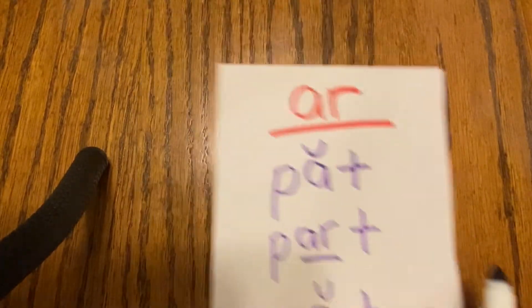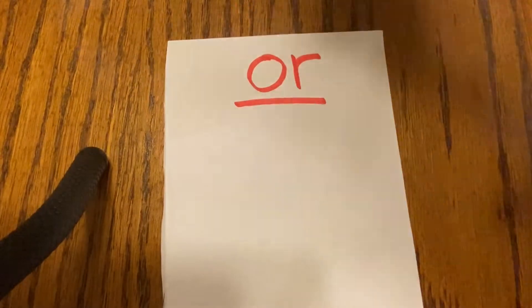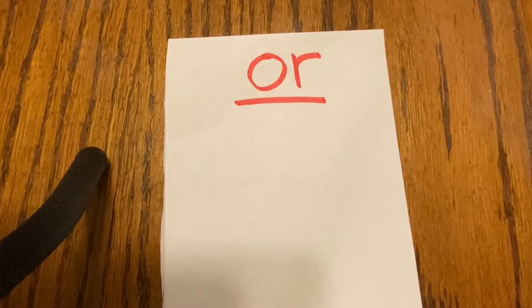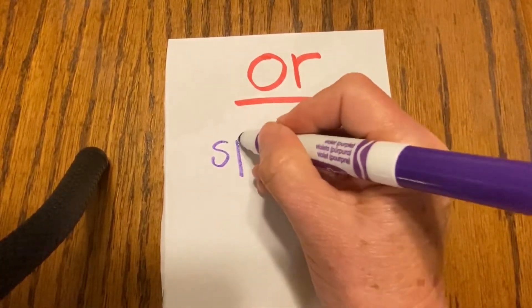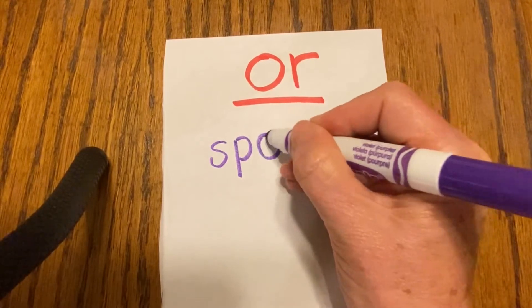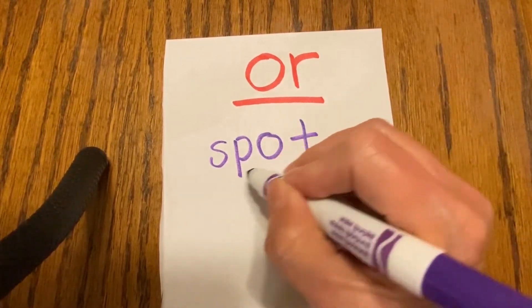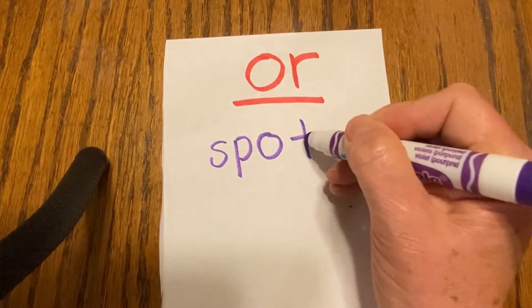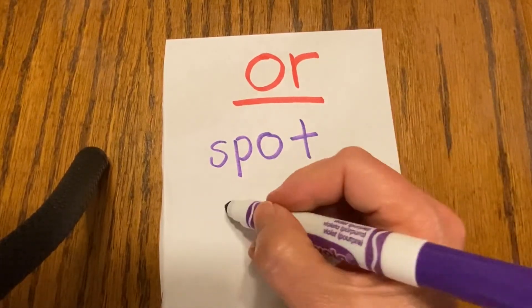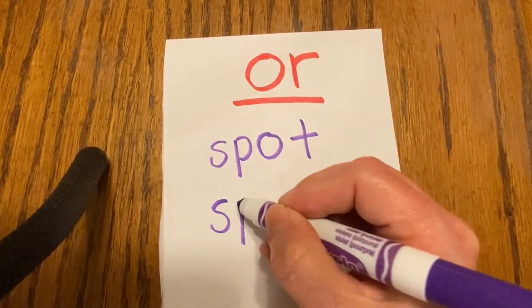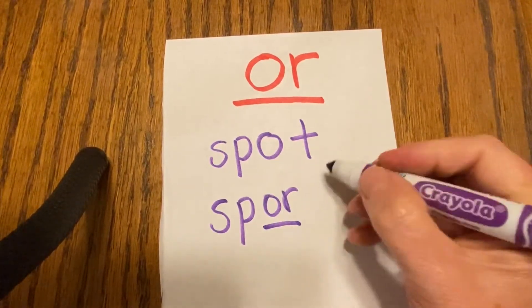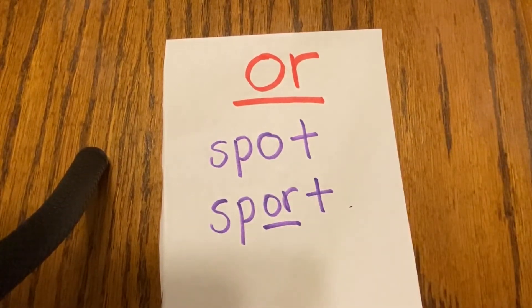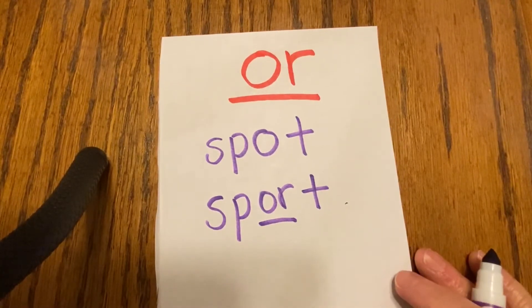All right, let's try the O-R. Remember — orange. How about the word S-P-O-T? Spot. Now remember I'm going to squeeze an R after the O — S-P-O-R-T. What word do I have? Sport!